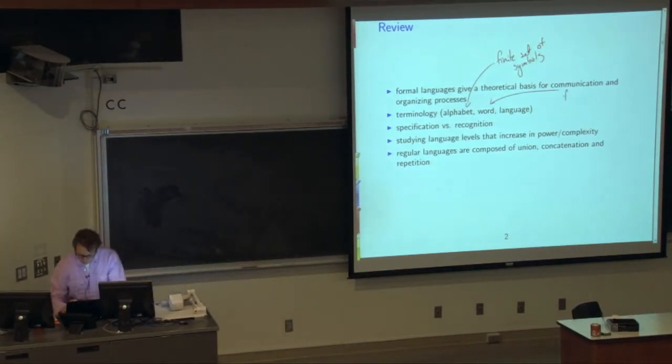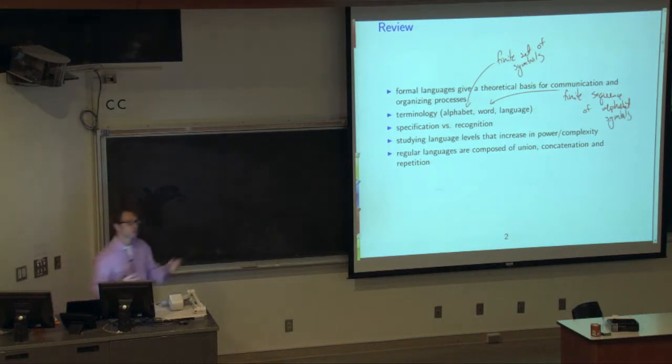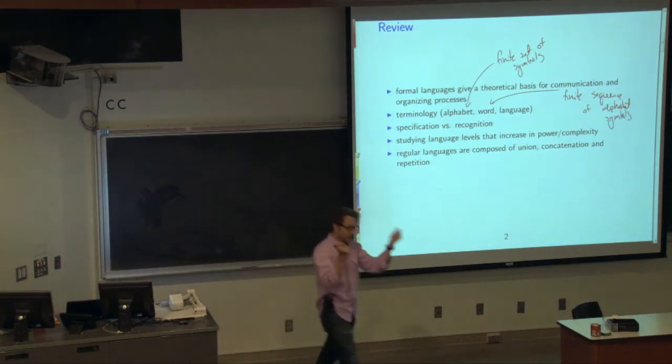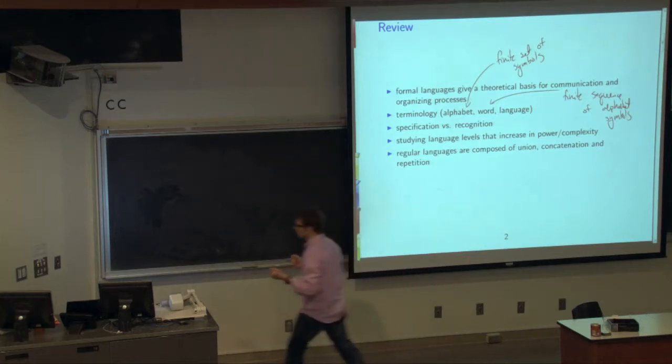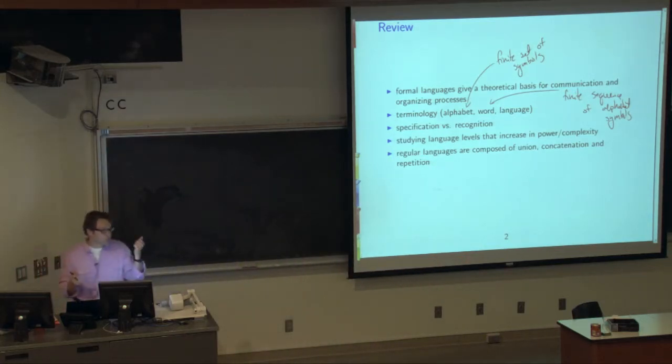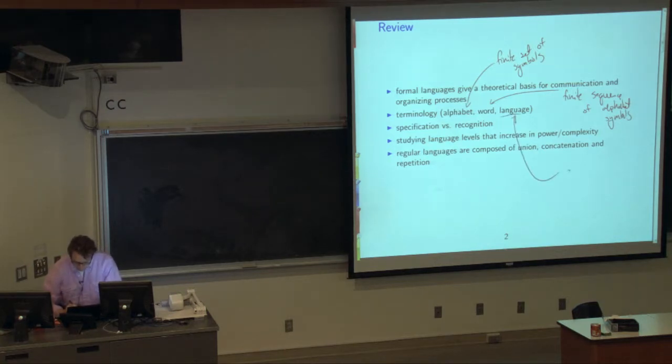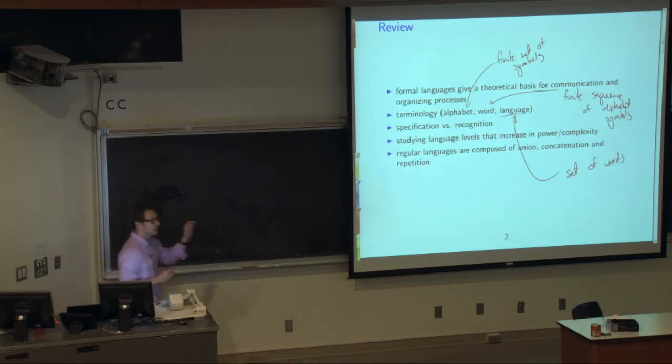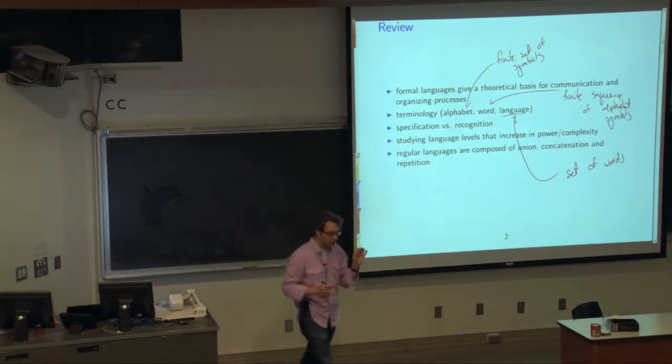By a word, I mean a finite sequence of alphabet symbols. In other words, I can take some alphabet symbols and put them all together to make a word. So in English, C-A-T forms a word called dog. And then language is a set of words.